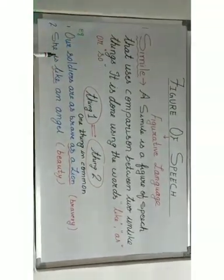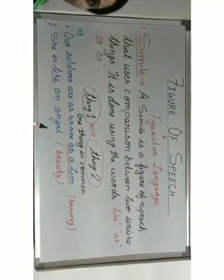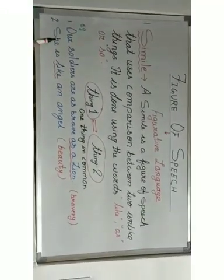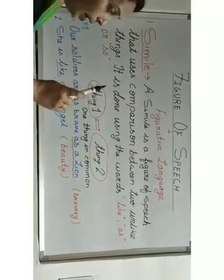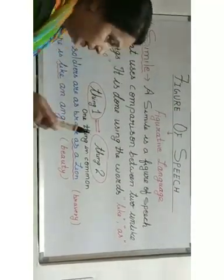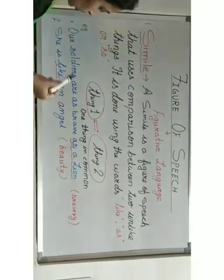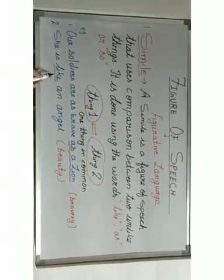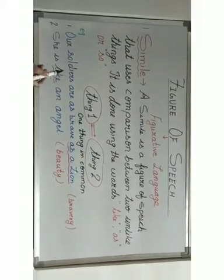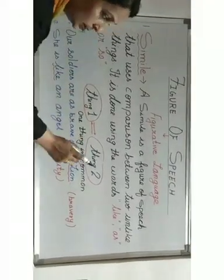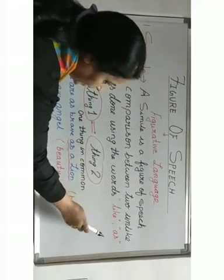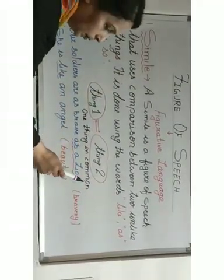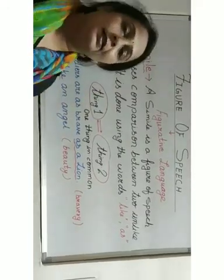Let us understand with the next example. She is like an angel. Here we are comparing a girl with an angel using the word 'like.' The one thing that is common between them is their beauty. So the comparison between two things using the words like, as, or so, with one common quality, is known as simile.